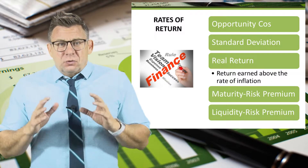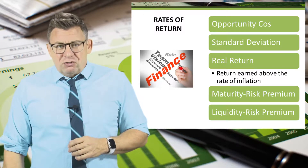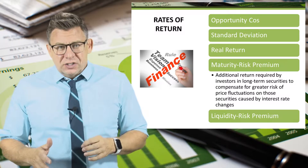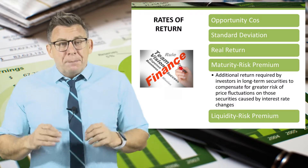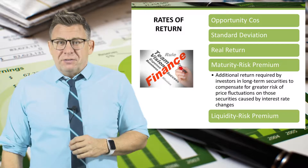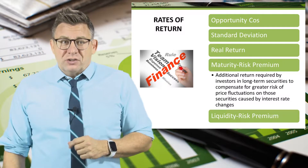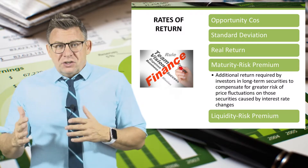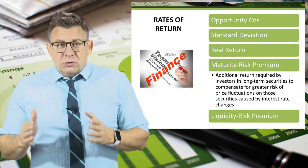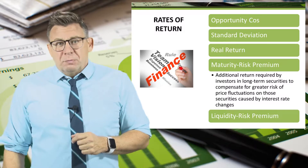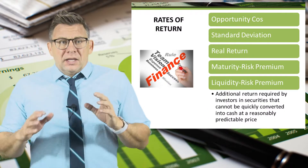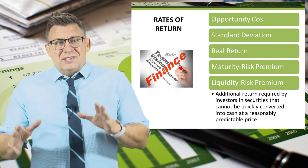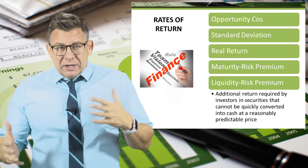Real rate of return is the rate of return earned above the rate of inflation. Maturity risk premium is an additional return required by investors in long-term securities to compensate for greater risk of price fluctuations on those securities caused by interest rate changes. When debt securities are many years from maturing, changes in interest rates can negatively impact the return, so investors require higher returns in order to buy securities like this.